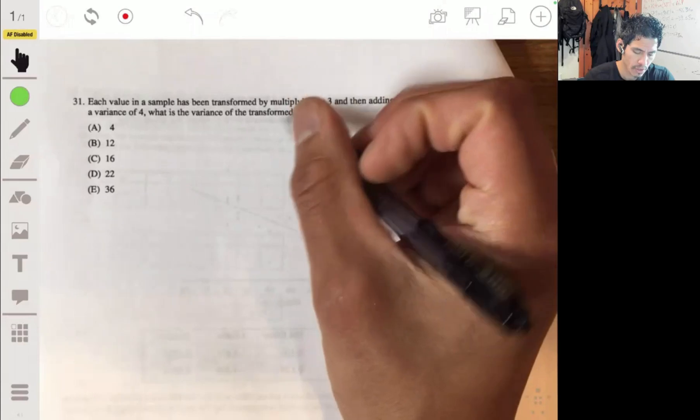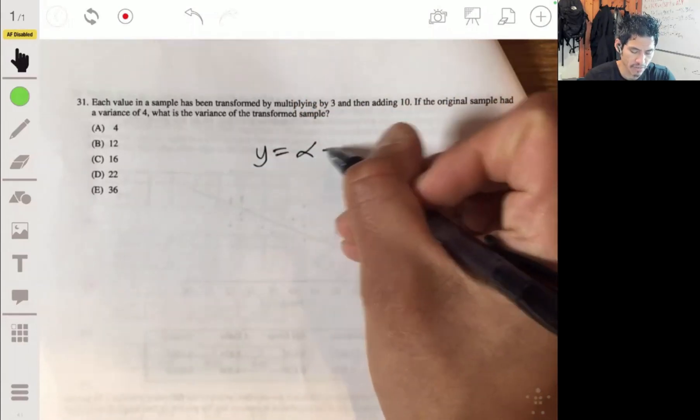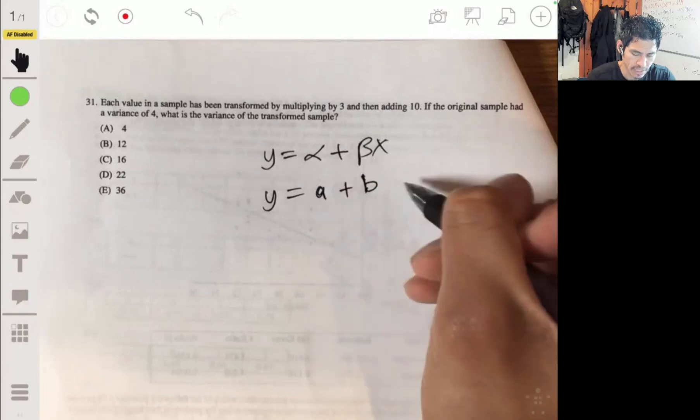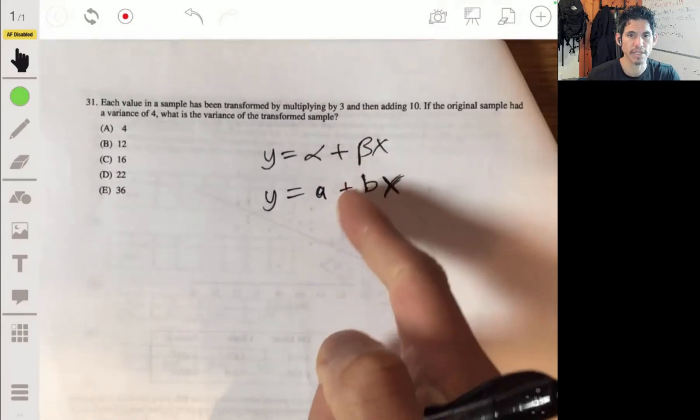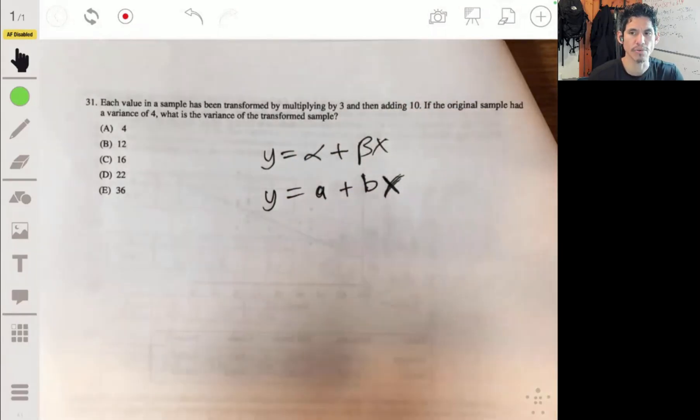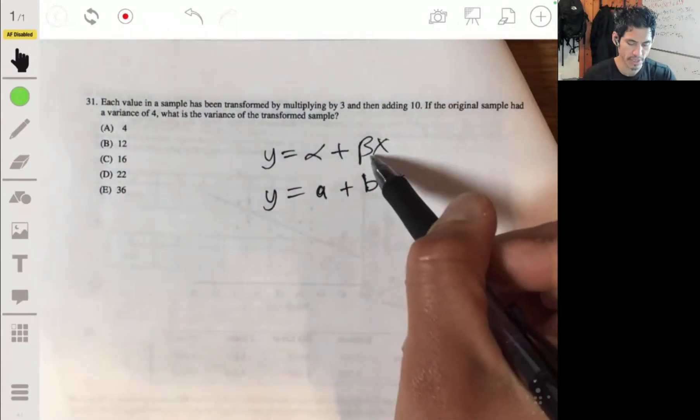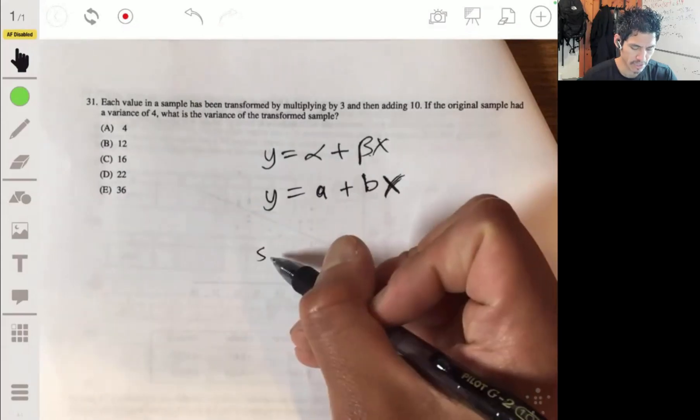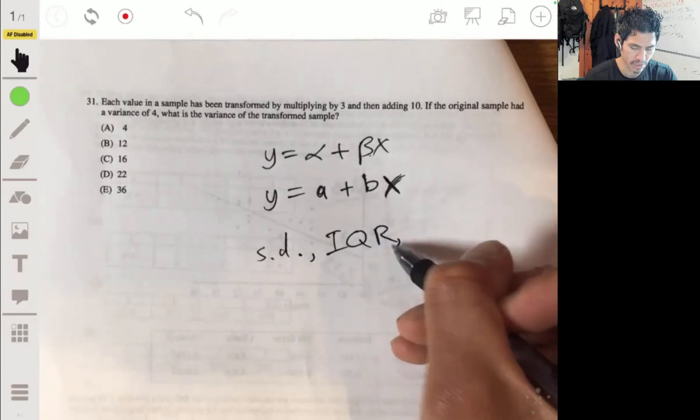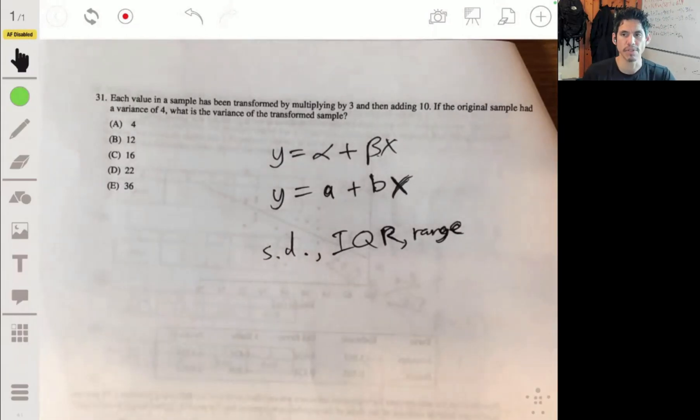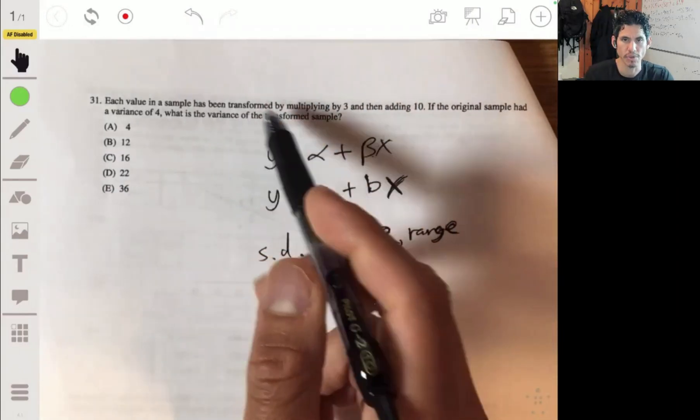If you remember, it's usually written as y equals alpha plus beta x, or y maybe equals a plus bx, usually in the stats books. So the b is the multiplying, the a is the adding the constant. For measures of center, they only get changed by b. Measures of spread are like standard deviation, IQR, range. Then there's just regular values. But right now we're dealing with the measure of spread.